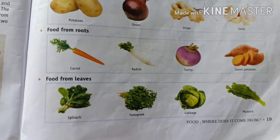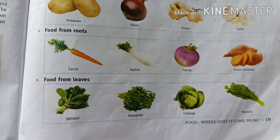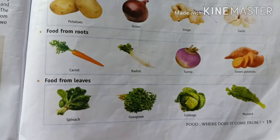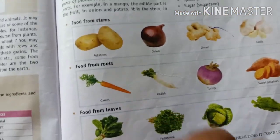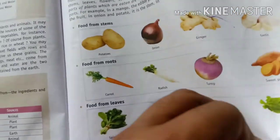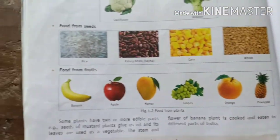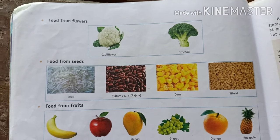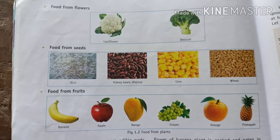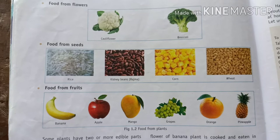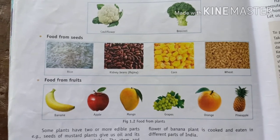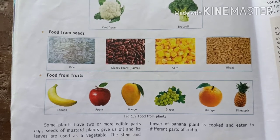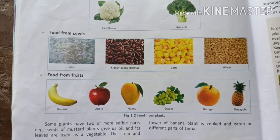Food from leaves: spinach, cabbage, mustard leaves. Fruit: tomato, lemon, apple, mango, grapes, orange, pineapple. So this is food from plants.